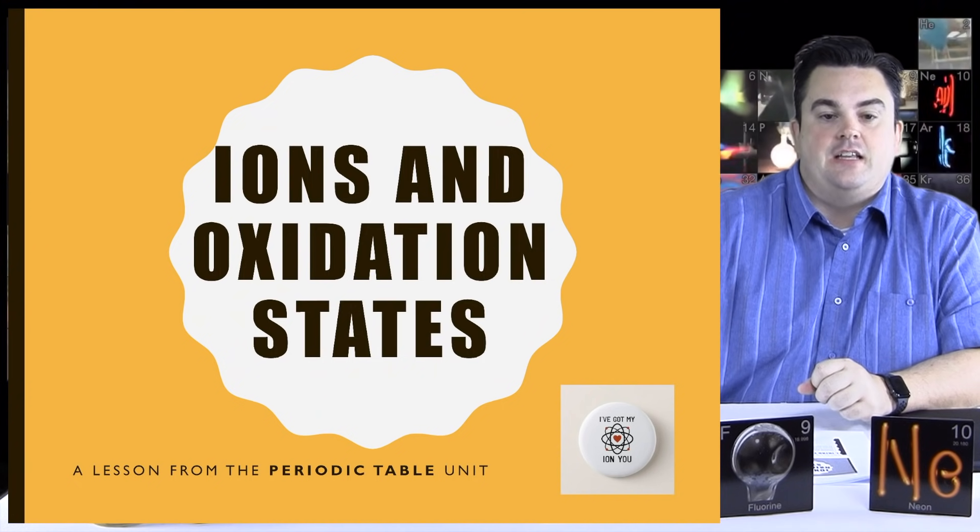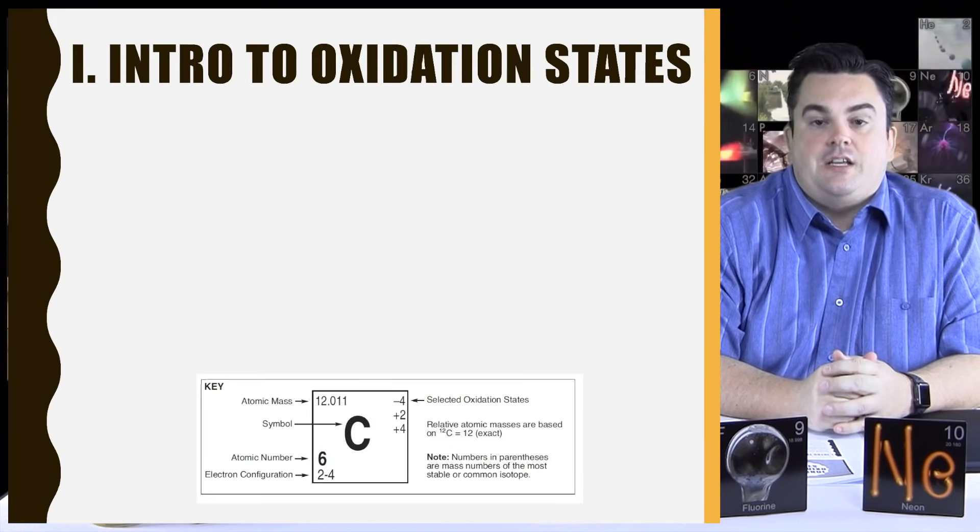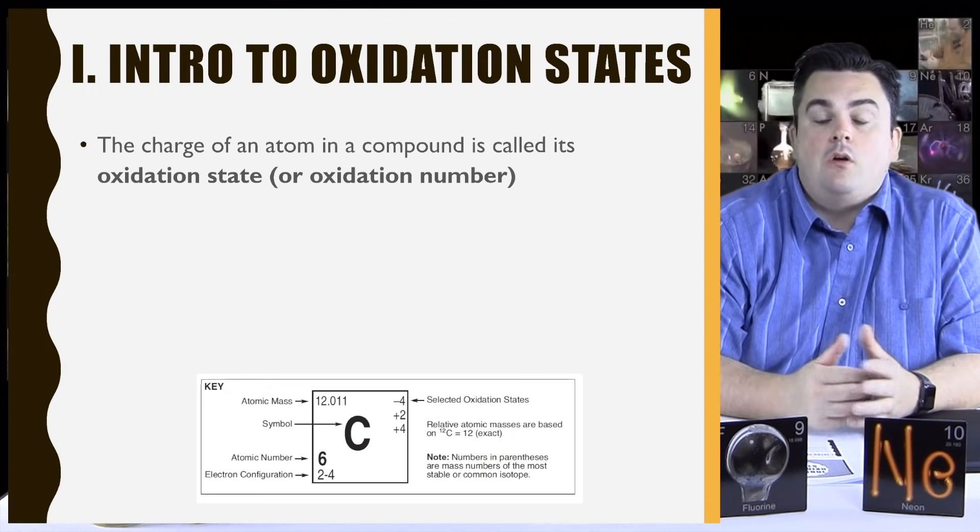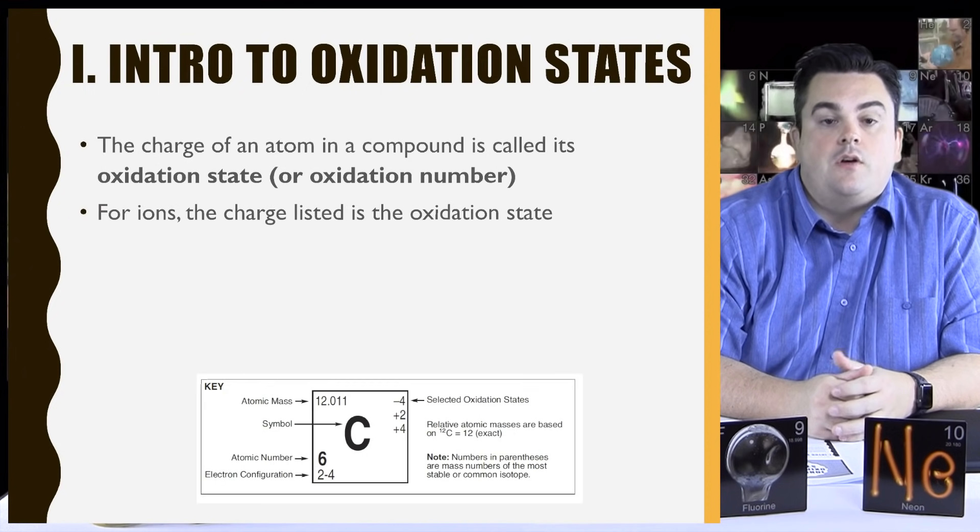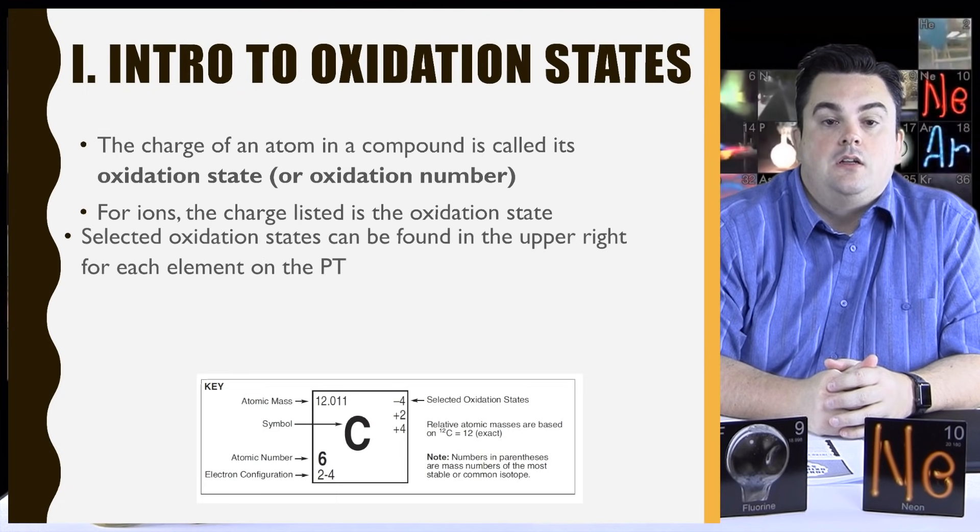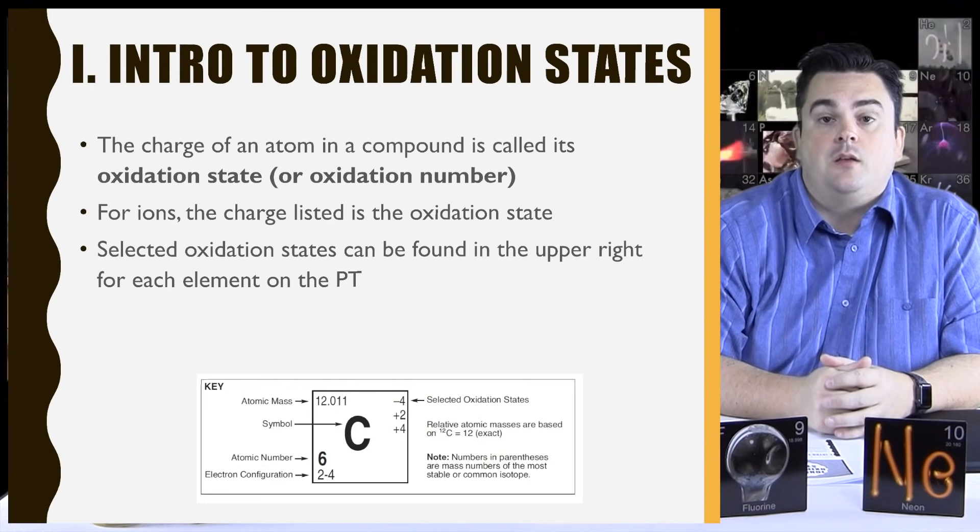Ions and oxidation states, a lesson from the periodic table unit. Intro to oxidation states. The charge of an atom in a compound is called its oxidation state, or oxidation number. For ions, the charge listed is the oxidation state.